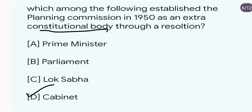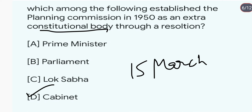The Planning Commission was responsible to formulate India's five-year plans. It was established on the 15th of March 1950, and the Prime Minister at that time served as its chairman.